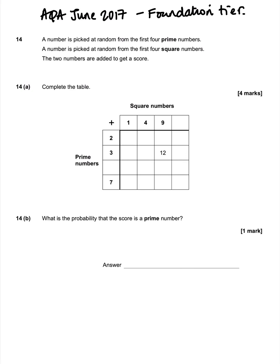A number is picked at random from the first four prime numbers. A number is picked at random from the first four square numbers. The two numbers are added to get the score.